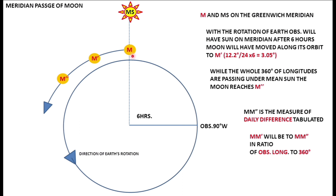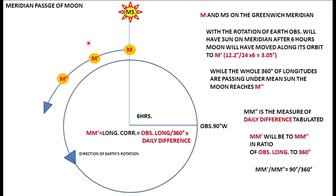The ratio of M-dash to M-double-dash is in the same ratio as the observer's longitude to 360 degrees, because the daily difference given in the tables is for a full 360-degree rotation of the Earth. Therefore, the longitude correction equals the observer's longitude divided by 360, multiplied by the daily difference.